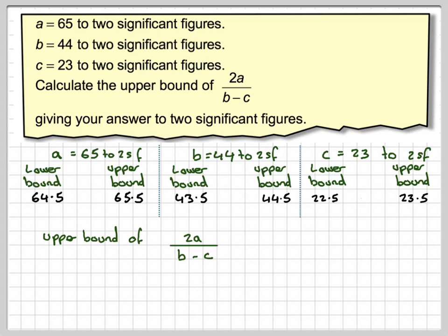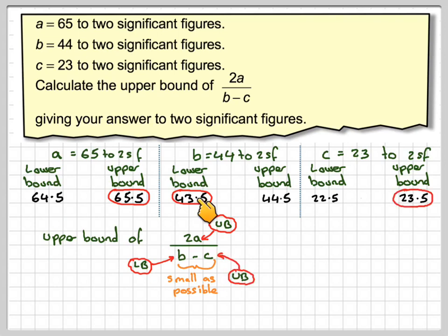So we want this to be as large as possible, and this to be as small as possible. So we want the upper bound of 2A, so that means the lower bound of this will be 43.5, and we want the upper bound of this. So we want the lower bound of B and the upper bound of C.